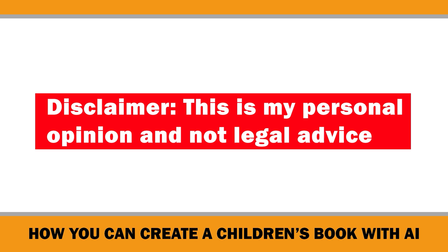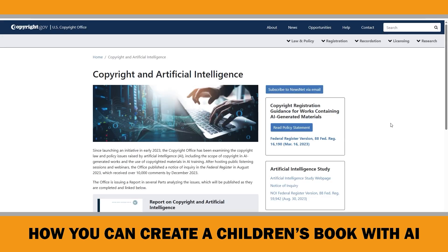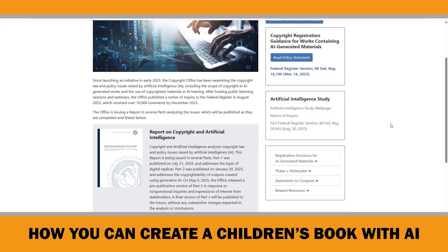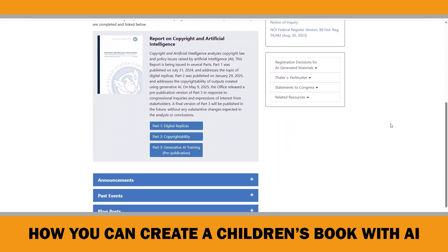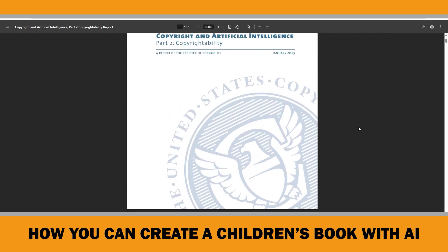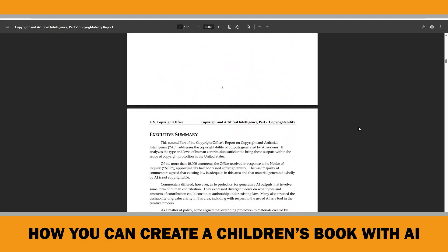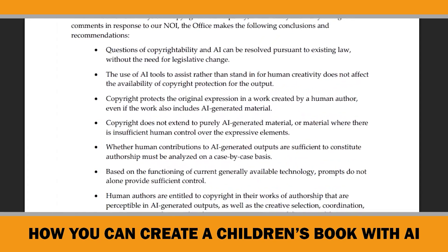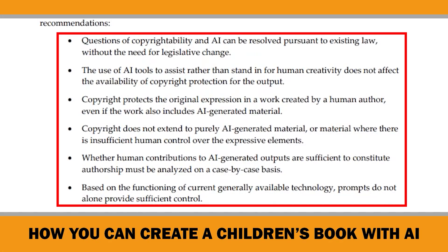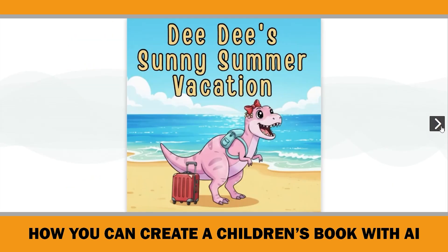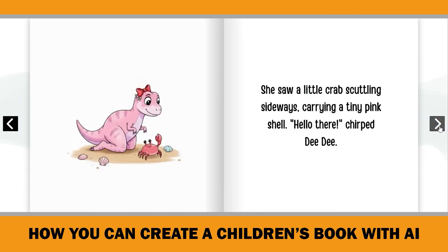Quick disclaimer — this is my personal opinion and not legal advice. Always check the terms of the tool you use if you plan to publish AI-generated content commercially. In the US and many other countries, purely AI-generated content isn't protected by copyright, meaning if you upload Gemini's output as-is you don't technically own exclusive rights to it. That's why it's important to use Gemini as a starting point, rewrite the text in your own style, edit illustrations, and combine the AI art with your own creative elements — this adds enough originality to confidently claim copyright protection.